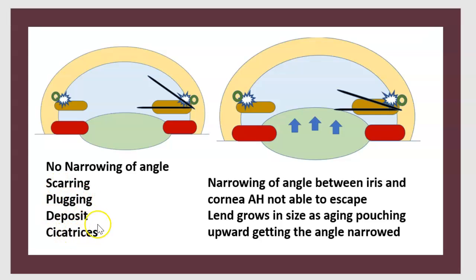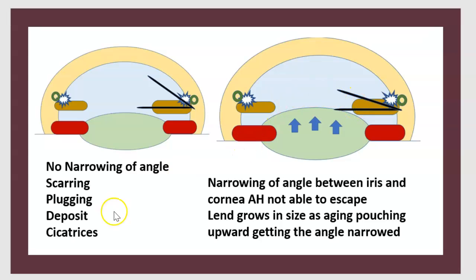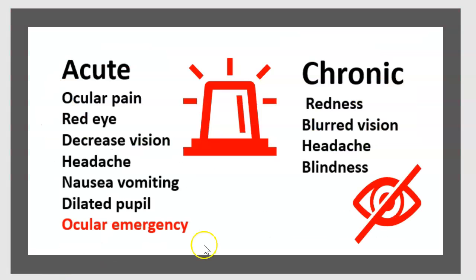There are two types: non-angular and narrow-angle. Non-angular angle closure occurs by scarring, plugging, or depositing cicatrices. Narrowing of the angle between the iris and cornea causes aqueous humor not to be able to escape. The lens grows in size with aging, pushing upward and causing the angle to narrow.